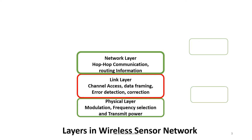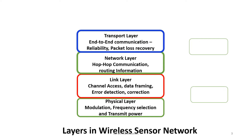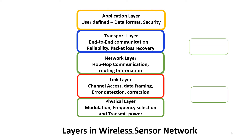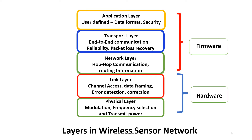The third layer is the network layer, which is responsible for hop-to-hop communication and routing information. The fourth layer is the transport layer, responsible for end-to-end communication, that is reliability, packet loss, and recovery. The next layer is the application layer, which is user-defined, covering data format and security. Out of these five layers, the physical layer and link layer discuss the hardware components, while the network layer, transport layer, and application layer discuss the firmware components of a wireless sensor network.